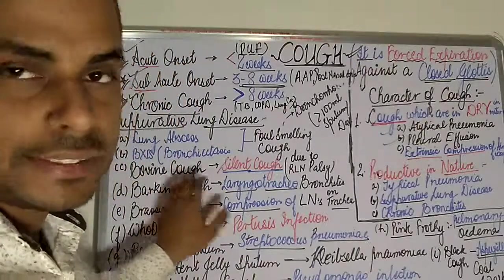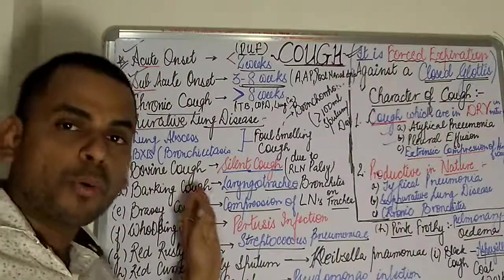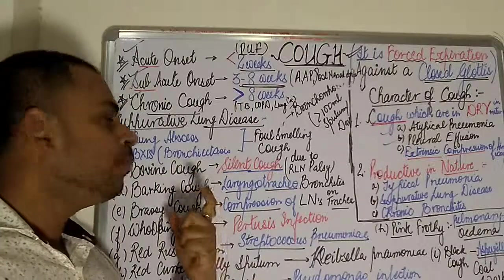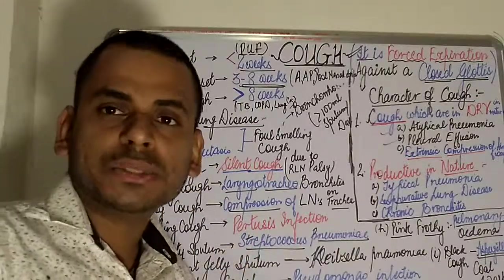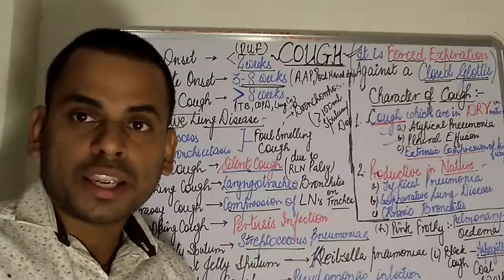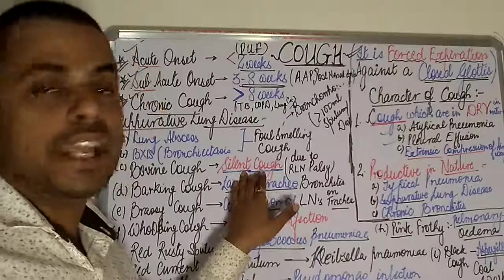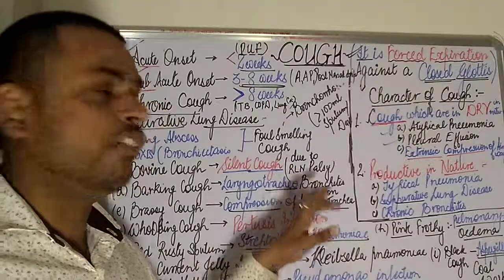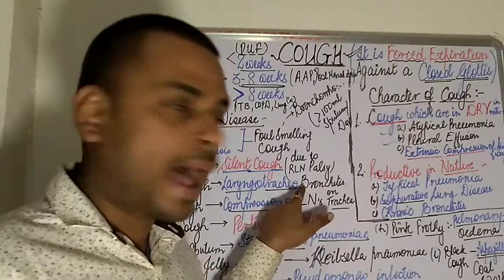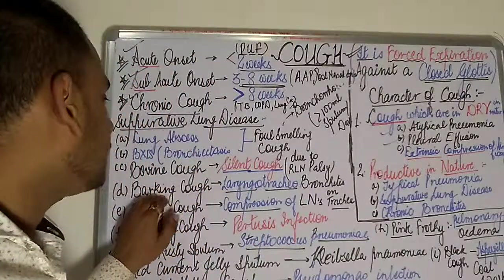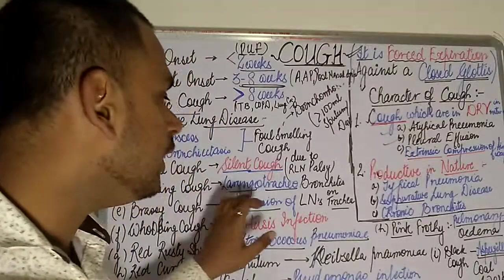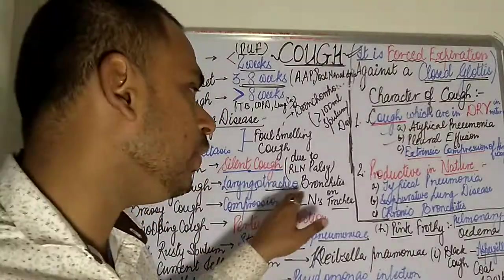Bovine cough — where bovine refers to cows and cattle — is a silent cough and occurs due to recurrent laryngeal nerve palsy. Moving on to barking cough, which is seen in patients of laryngotracheobronchitis.